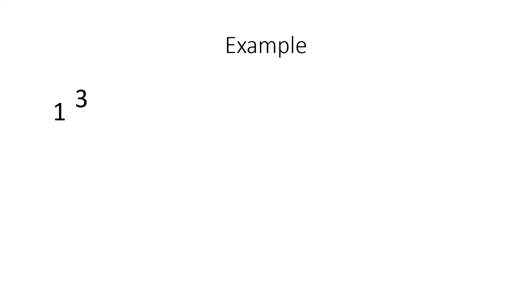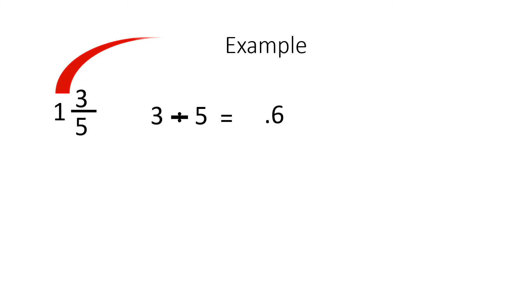Now what about mixed fractions? For example, we have a fraction, 1 and 3 fifths. Same thing. We take the top number, the 3, divide it by the bottom number, the 5, and the answer will be 0.6. Now the 1, we just carry it over and put it right in front of the decimal, before the decimal. 1.6 is the answer.